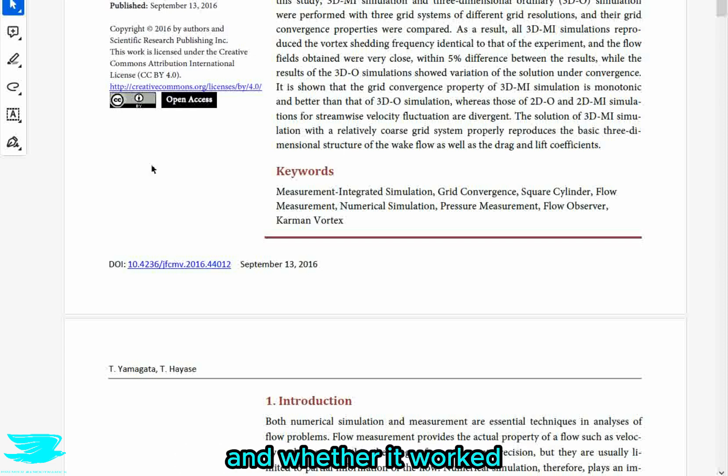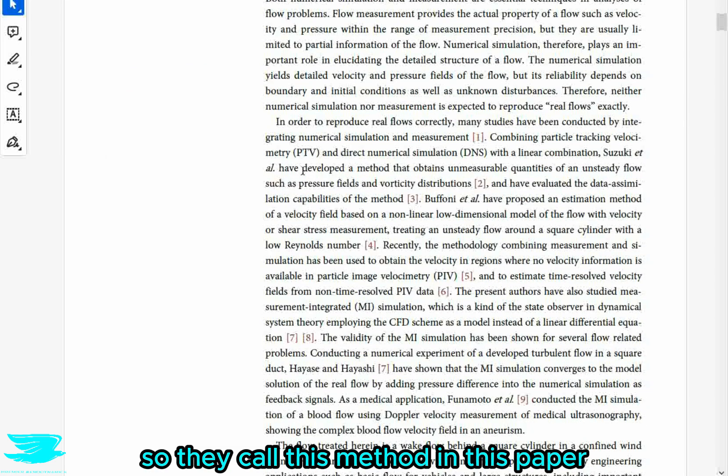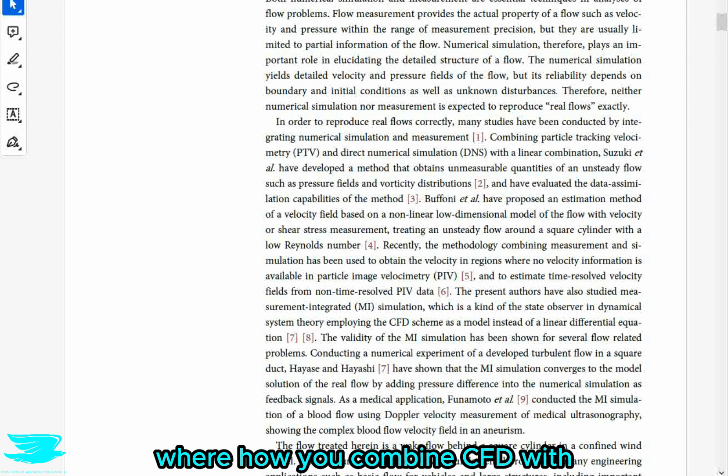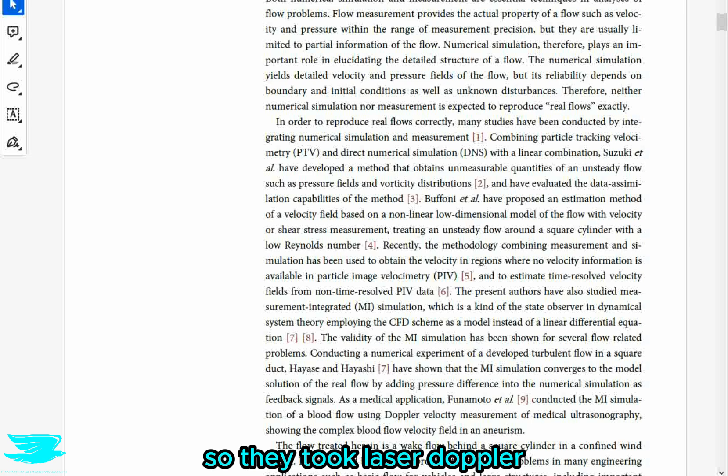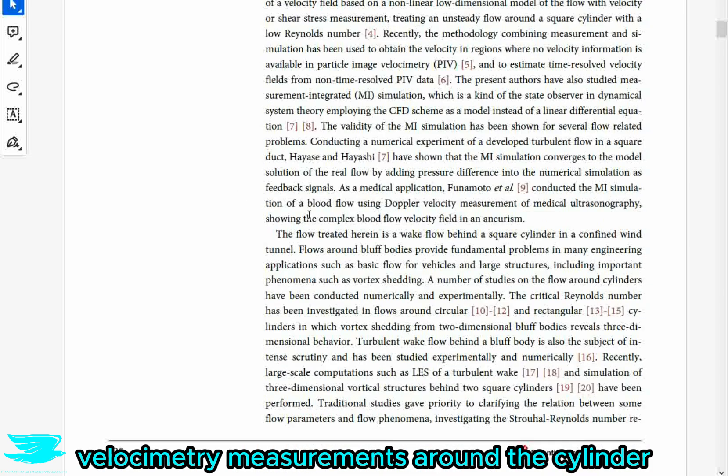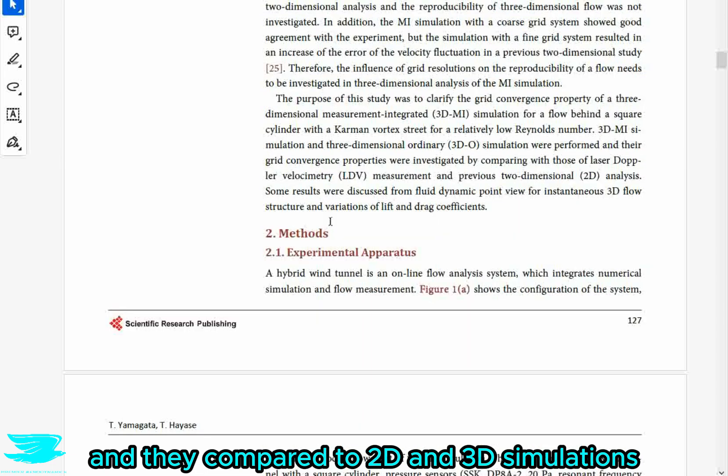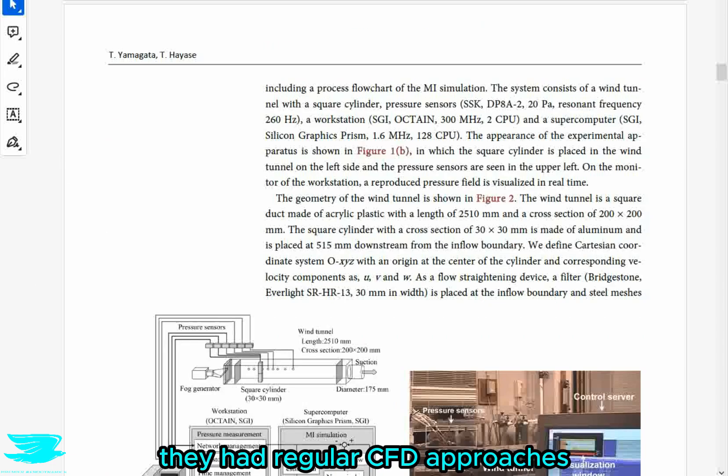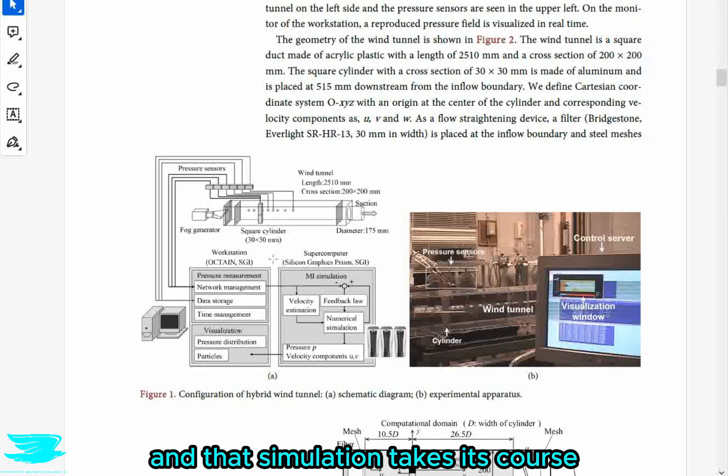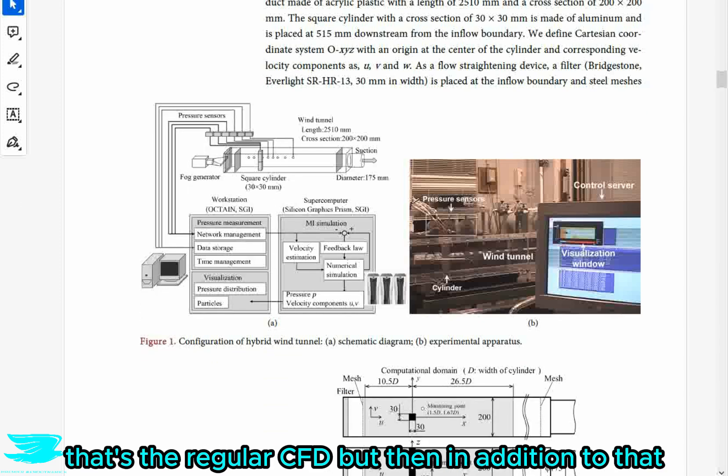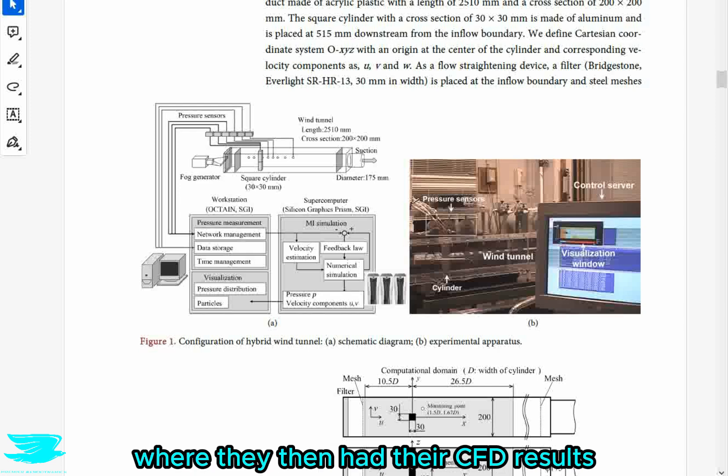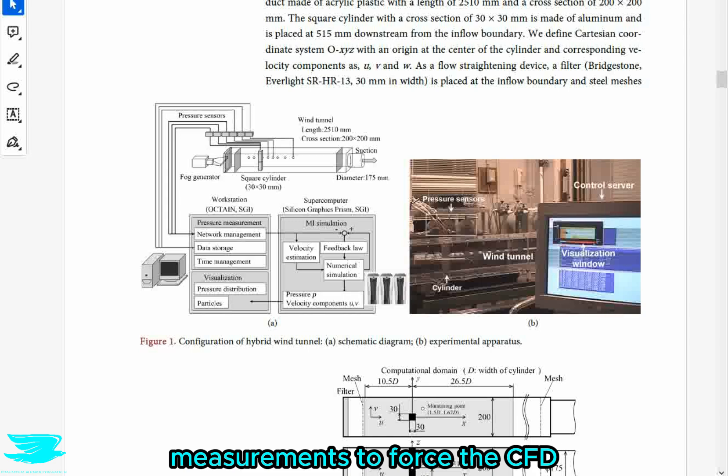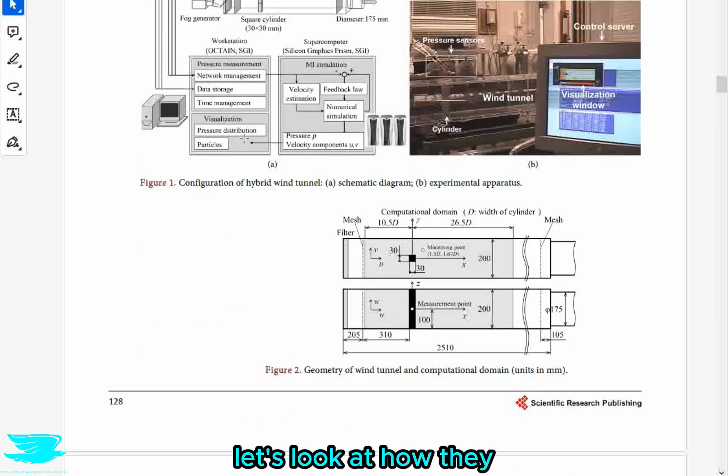So let's dive into what they did and whether it worked. So they call this method in this paper, how you combine CFD with experimental data as CFD measurement integrated or CFD MI for short. So they took laser Doppler Velocimetry measurements around the cylinder and they compared 2D and 3D simulations.